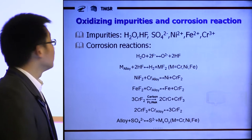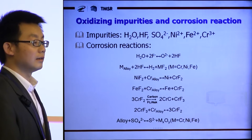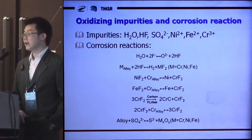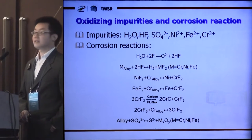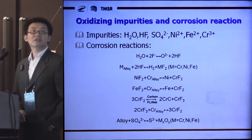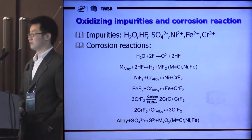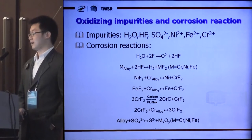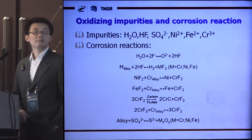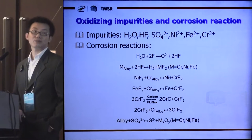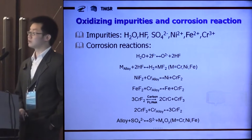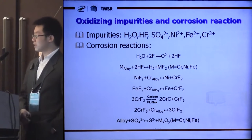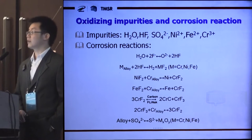These slides show the typical oxidizing impurities that exist in molten salts and the corrosion reactions caused by them. Water is the biggest impurity because it can lead to a series of corrosion reactions. Some first corrosion products may corrode the alloy a second time — CrF2 may become corrosive CrF3 with the aid of carbon in the molten salts, and sulfate may directly corrode the alloy at high temperature. So we shall make efforts to remove these impurities from molten salts.